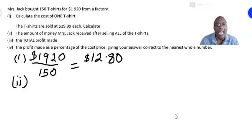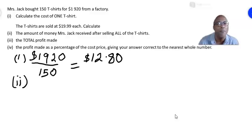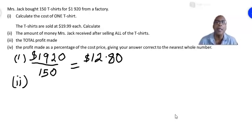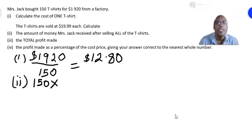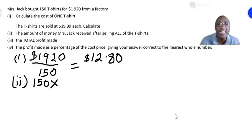Let's go to the second part. The t-shirts are sold at nineteen dollars and ninety-nine cents each. Calculate the amount of money Mrs. Jack received after selling all the t-shirts. We know the number of t-shirts is 150. To find the total amount received, we multiply that number of t-shirts by the selling price of one t-shirt, which is nineteen dollars and ninety-nine cents.